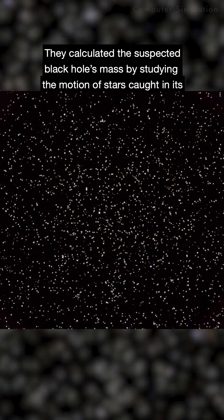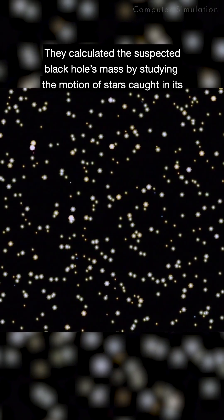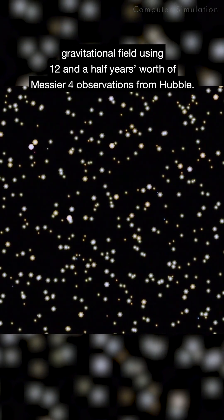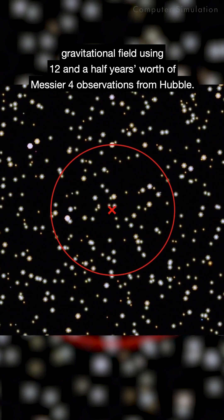They calculated the suspected black hole's mass by studying the motion of stars caught in its gravitational field using 12.5 years' worth of Messier 4 observations from Hubble.